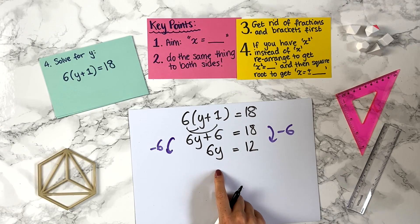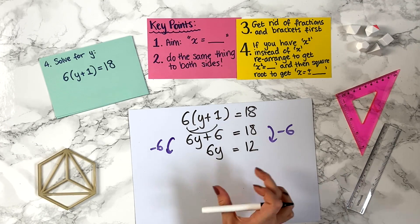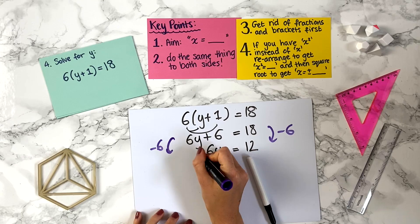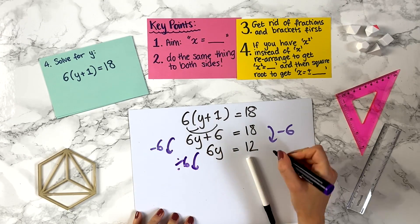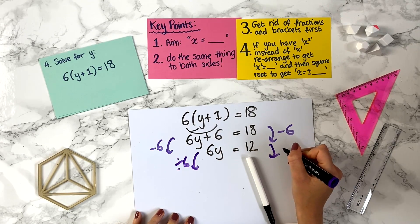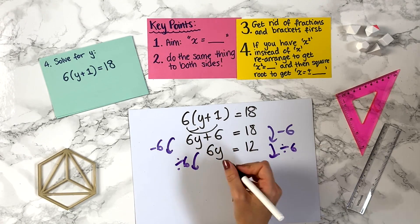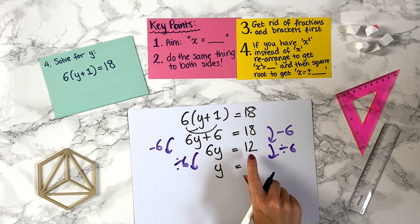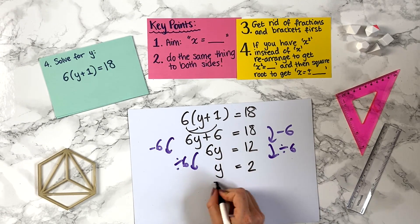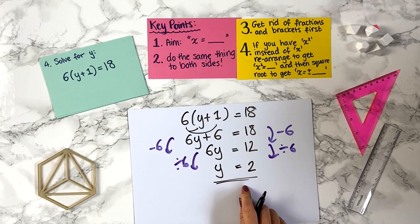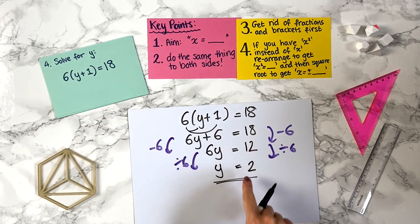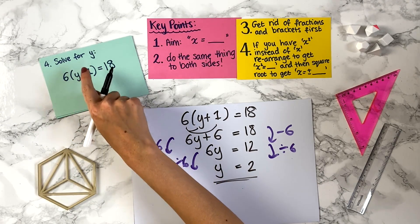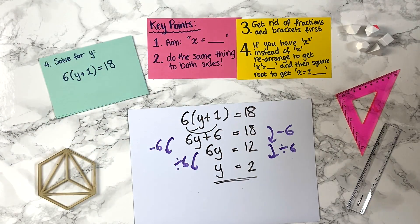We now want y equals something on its own, so we divide by 6 on both sides: 6y divided by 6 is y, and 12 divided by 6 is 2. So the answer is y equals 2. We can check quickly: y plus 1 gives 2 plus 1, which is 3, and 3 times 6 is 18. Correct.